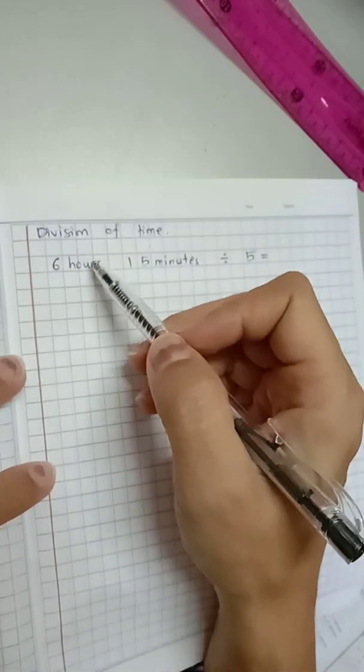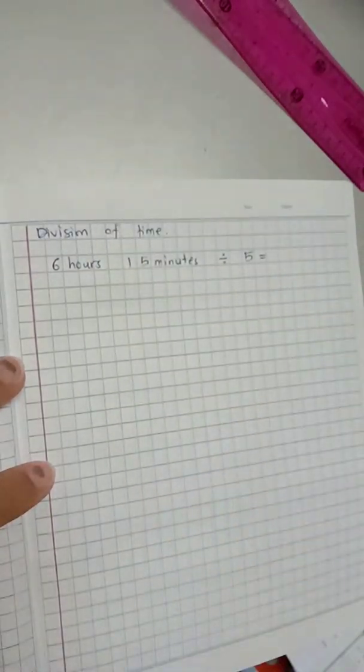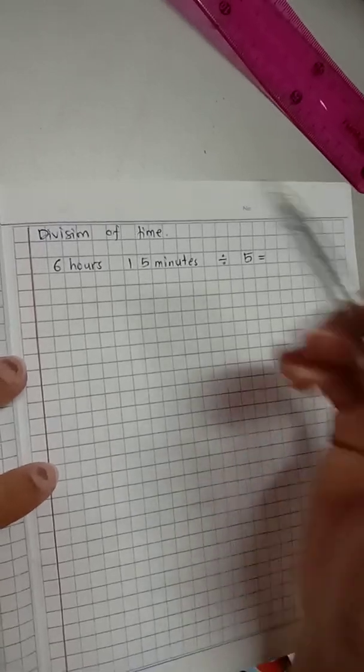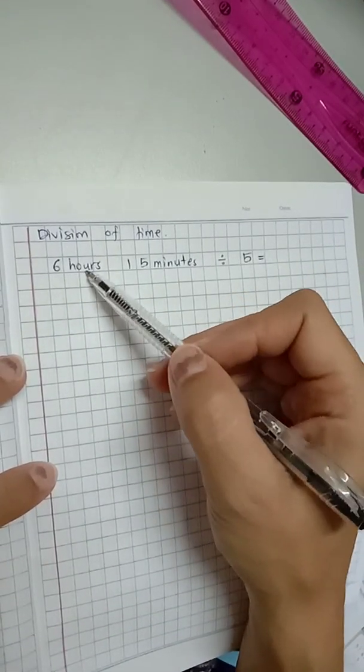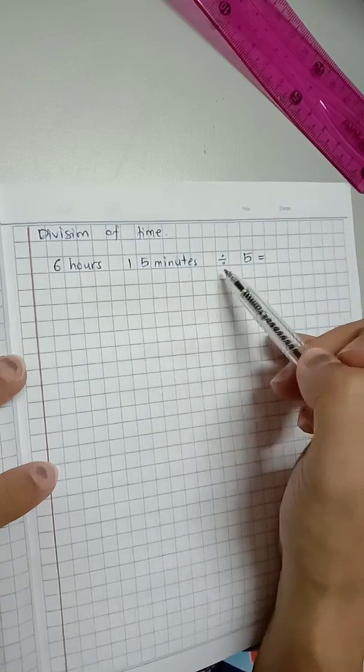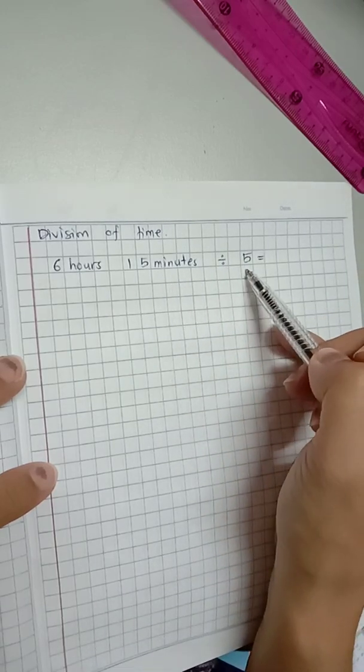Hello, this time I'm going to show you how to do division of time. Let's say the question is 6 hours, 15 minutes, divide by 5.